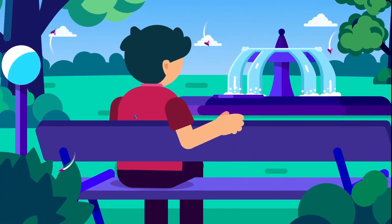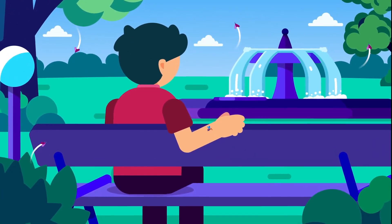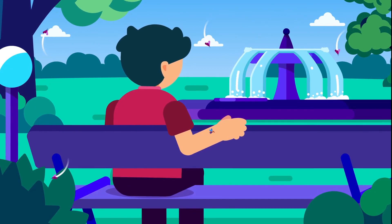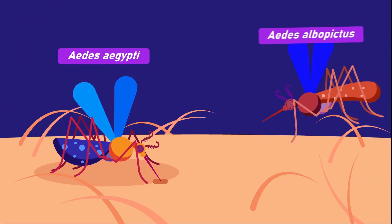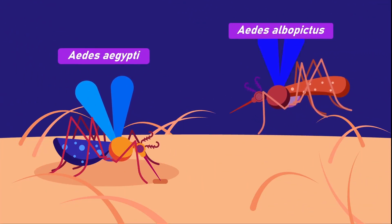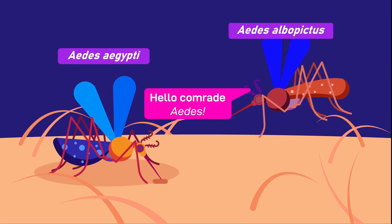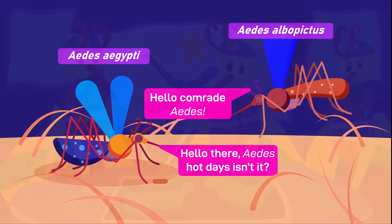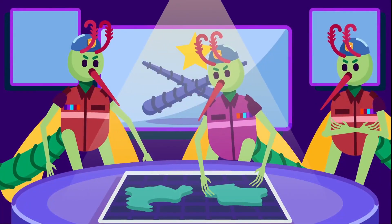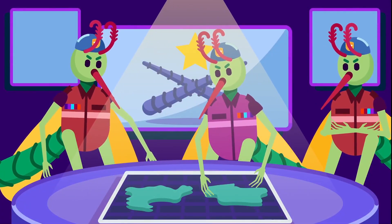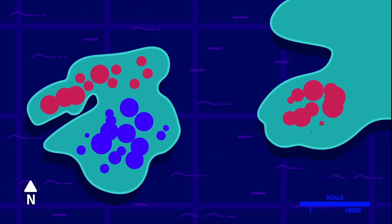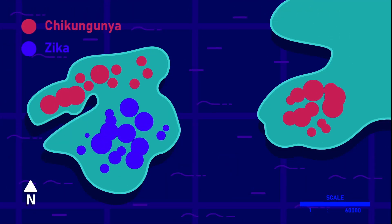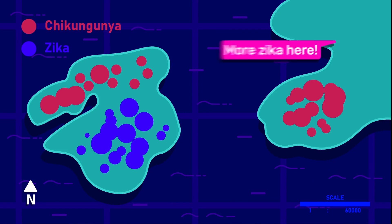The virus is spread via the bite of a mosquito, mostly by Aedes aegypti and to a lesser extent by Aedes albopictus. Important to note is that these very same mosquitoes are involved in the spread of other viral diseases, including chikungunya and Zika.